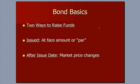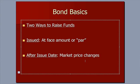I want to talk about bond basics. There are two ways to raise funds to run your business. One is to issue stock or equity, in which the person investing is an owner. The other way is to issue debt, like a bond, in which the other person investing is a creditor. So we have owners' equity and we have creditors' debt. This conversation is about the debt side of things.